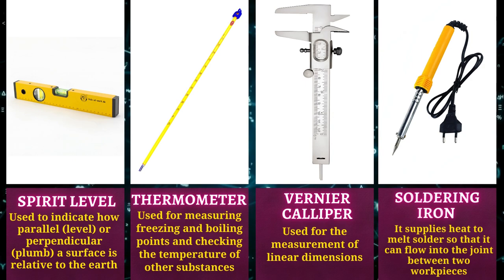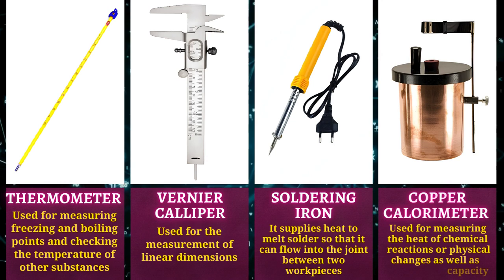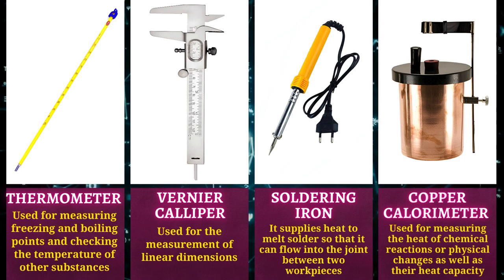Soldering iron supplies heat to melt solder so that it can flow into the joint between two work pieces. Copper calorimeter is used for measuring the heat of chemical reactions or physical changes as well as their heat capacity.